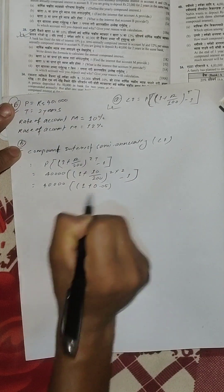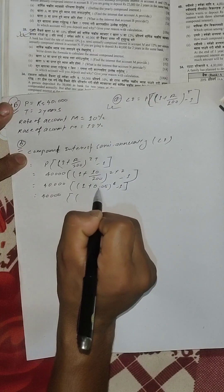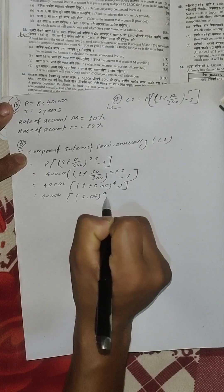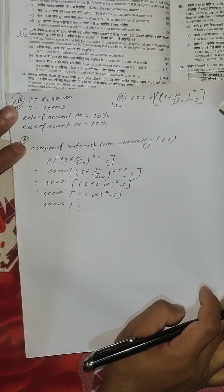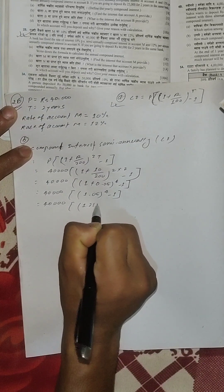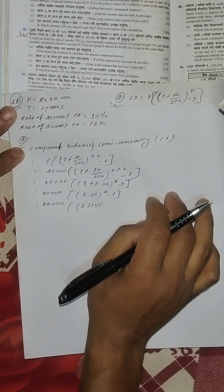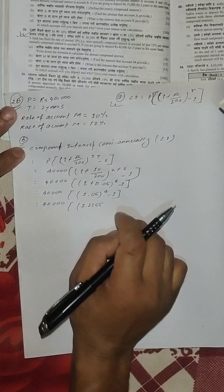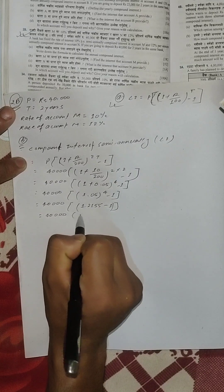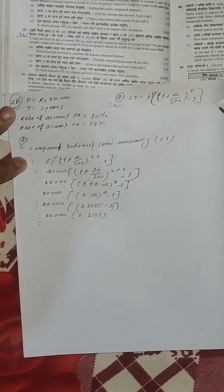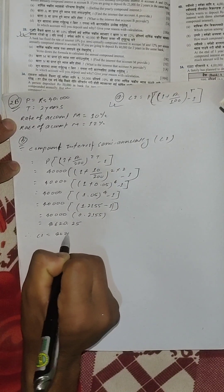10 divided by 200 is 0.05. So it becomes 40,000 times (1.05 to the power 4 minus 1). That equals 40,000 times (1.05)^4 minus 1. Therefore, CI is equal to 8,620.25.